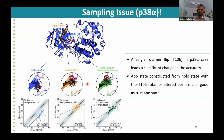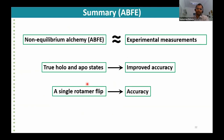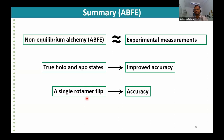In summary for test case two: non-equilibrium alchemical methods can give very accurate absolute binding free energies, close to experimental measurement but at much lower computational cost. If experimental structures of both the true holo and apo states are available, it is advised to include both in simulations for improved accuracy, as demonstrated across six target systems. A single rotameric flip can have a significant impact on accuracy, so it's important to sample all possible rotameric states near the active site.